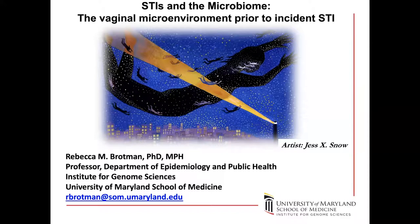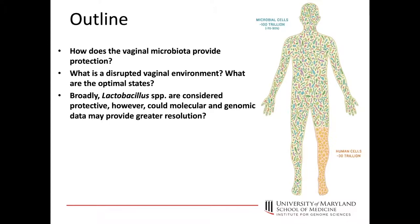The next speaker is Rebecca Brahman, professor of epidemiology and public health at the University of Maryland School of Medicine Institute for Genome Sciences. Over the past 15 years she has developed a research career in various aspects of the human microbiome with an emphasis on women's health — including the role of the vaginal microbiome in susceptibility to STIs and biological factors associated with bacterial vaginosis. She was asked to talk about STIs and the microbiome, covering vaginal microbiota protection of the female reproductive tract, what constitutes a disrupted vaginal microenvironment, and how molecular and genomic data can provide greater resolution.